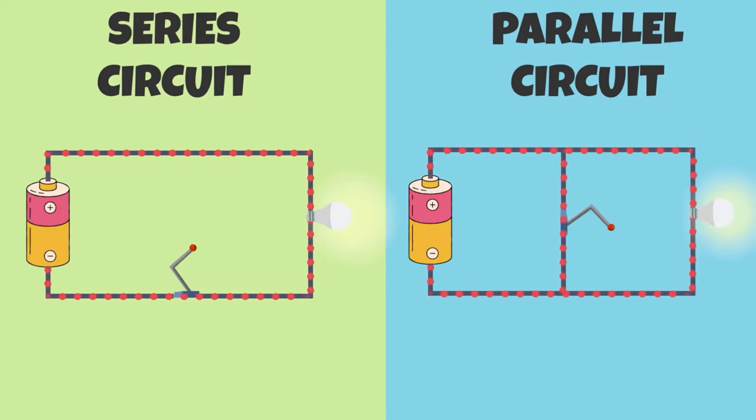A parallel circuit has multiple paths for energy to flow through. If a switch were to be open in a parallel circuit, it is possible that there will be a complete path for electric energy to flow through.